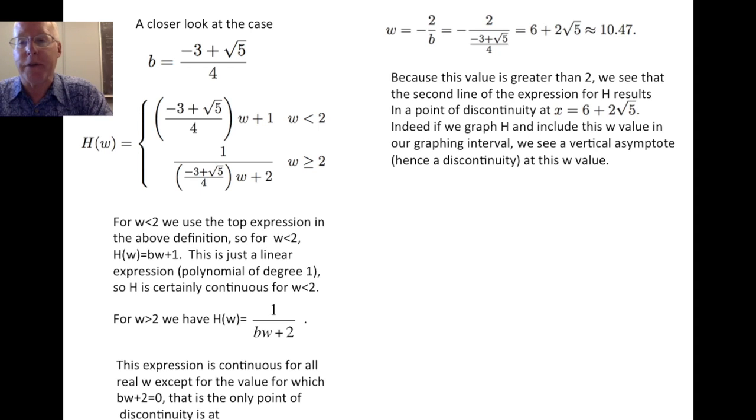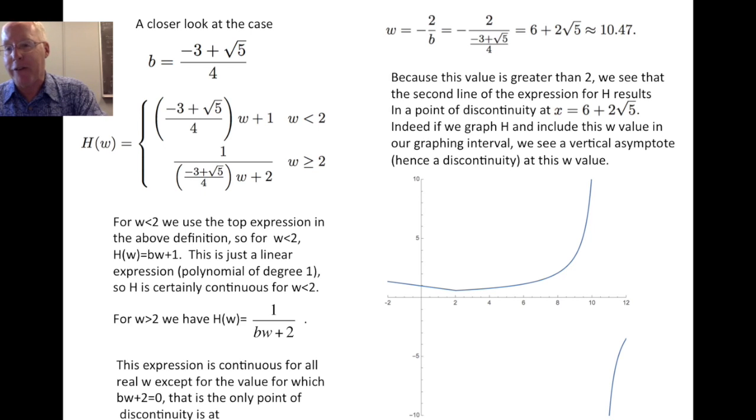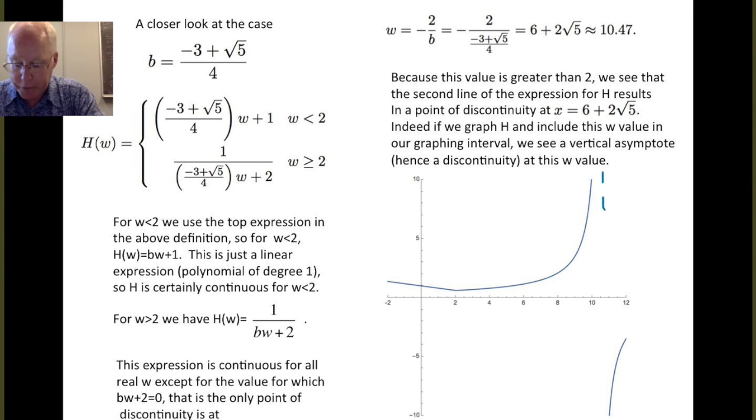Now, we didn't see this point in the previous graph because we only graphed the h on a small interval. But if we include this, if we enlarge the interval on which we show the graph, we see a graph looking something like this. And so, we do see the discontinuity at the value of about 10.5. What you see happens here is that there's evidently a vertical asymptote or something of that nature right here. The function going off to infinity on one side, minus infinity on the other. And, of course, that makes the function not continuous. So, for the value b equals minus 3 plus root 5 over 4, the resulting function is continuous at all but one point. And so, it is not continuous for all real numbers, but it is continuous as long as you avoid the point 6 plus 2 root 5.